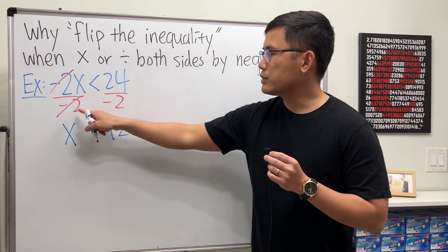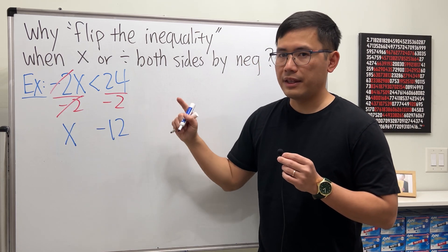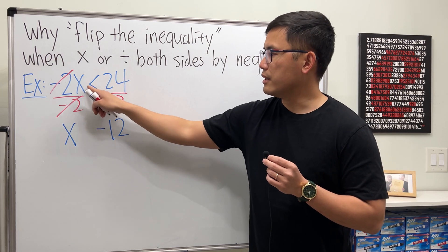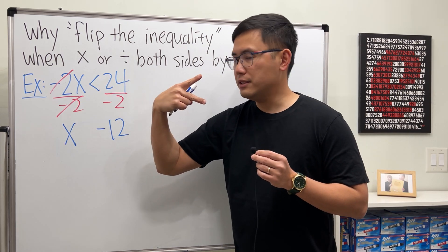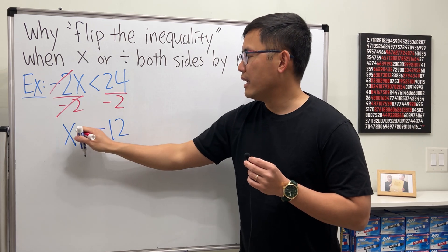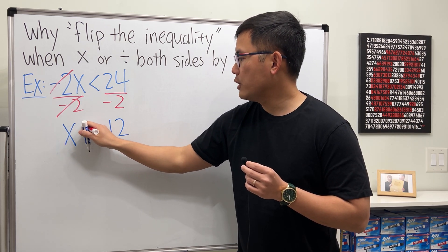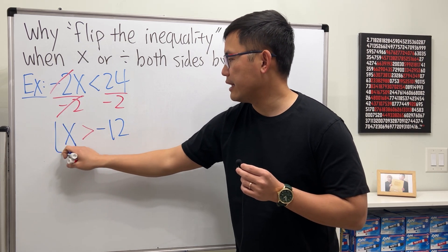But because we are dividing both sides by a negative number, we will have to take the inequality and then flip it the other way. So instead of this, you'll get that. Therefore, x will be greater than negative 12. And this right here is the answer.